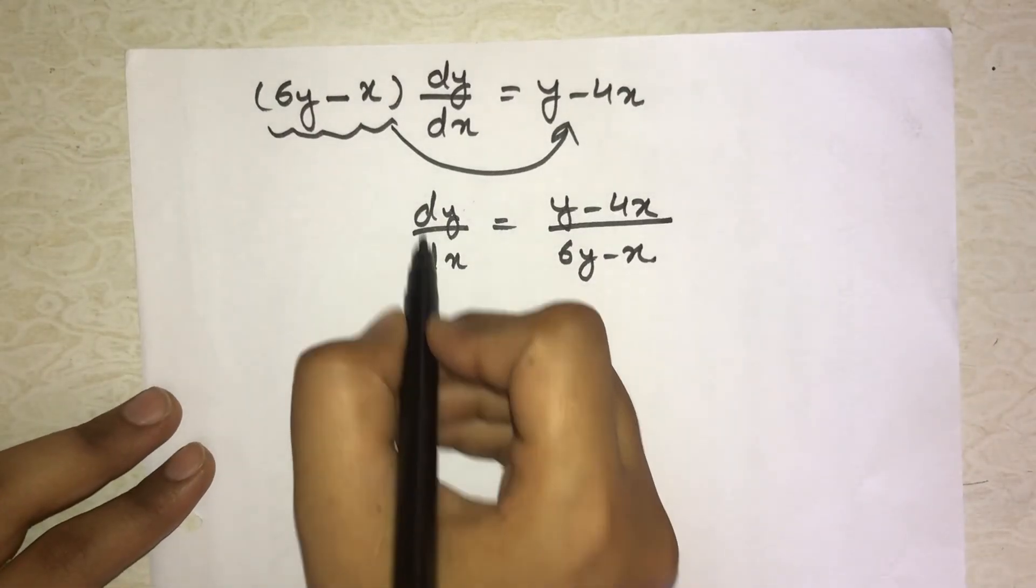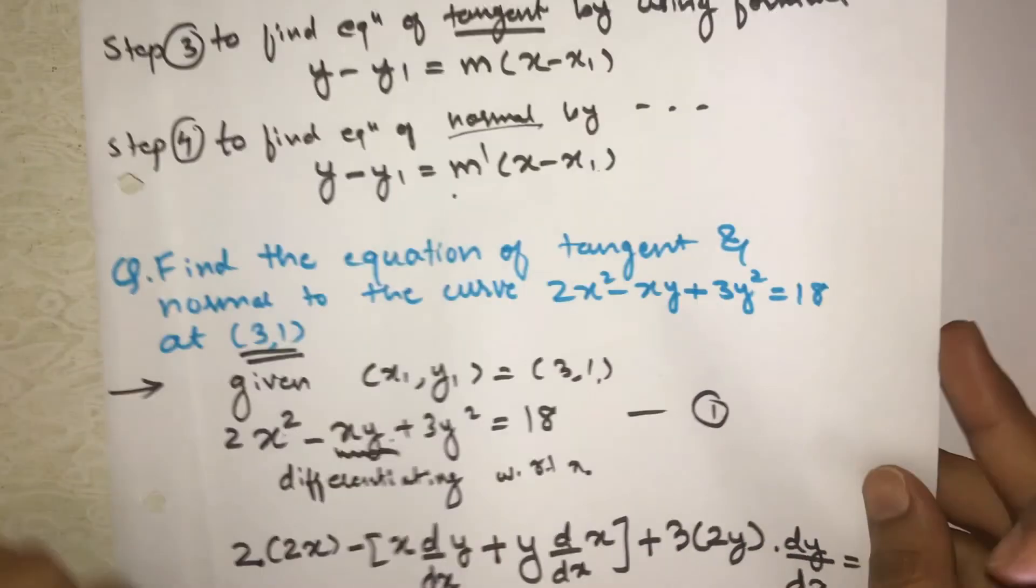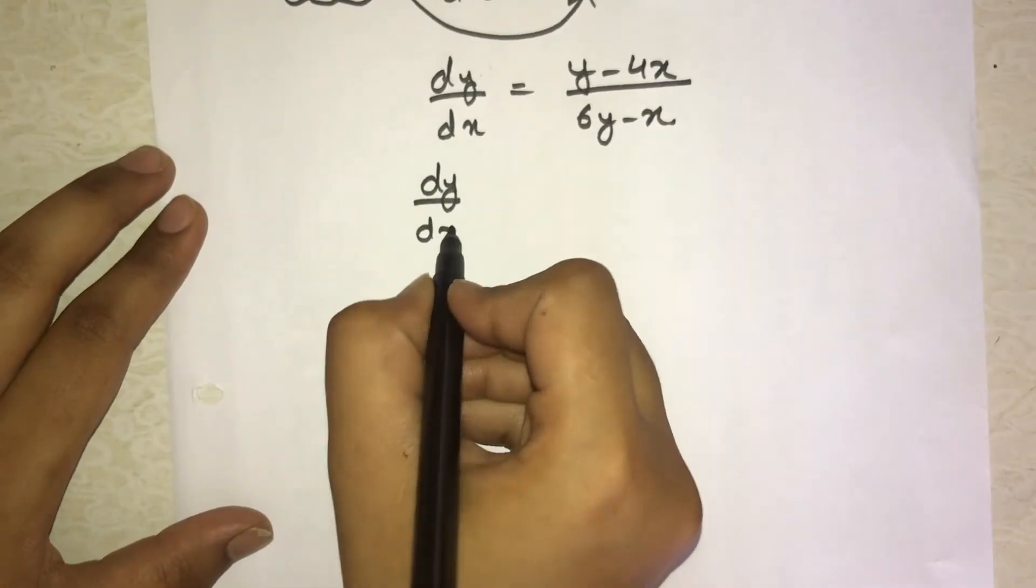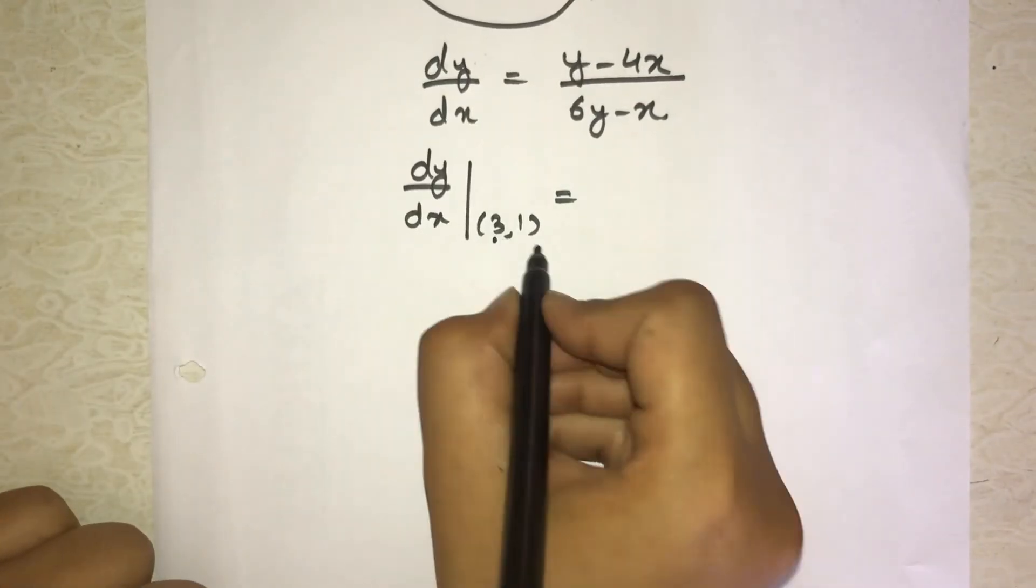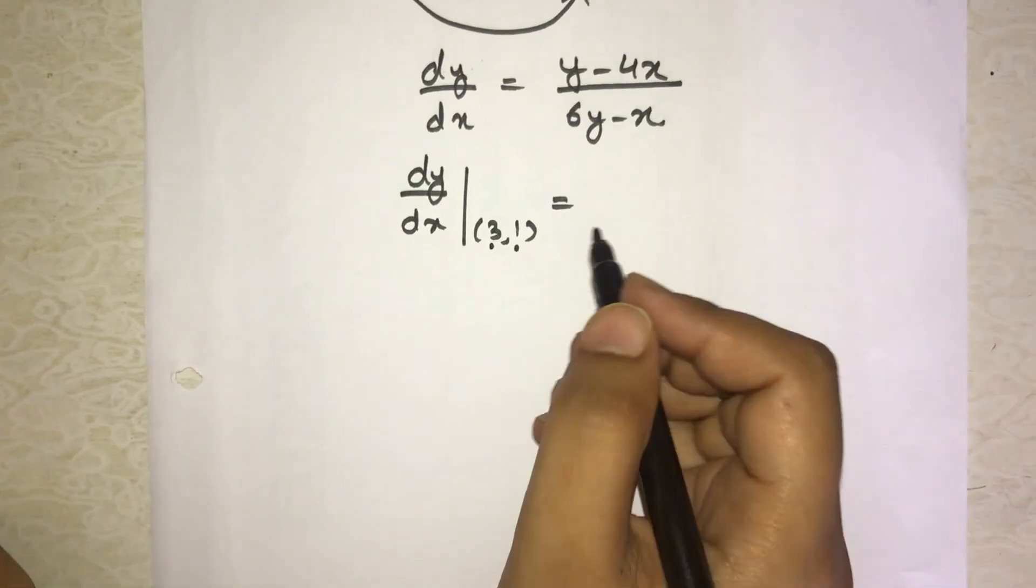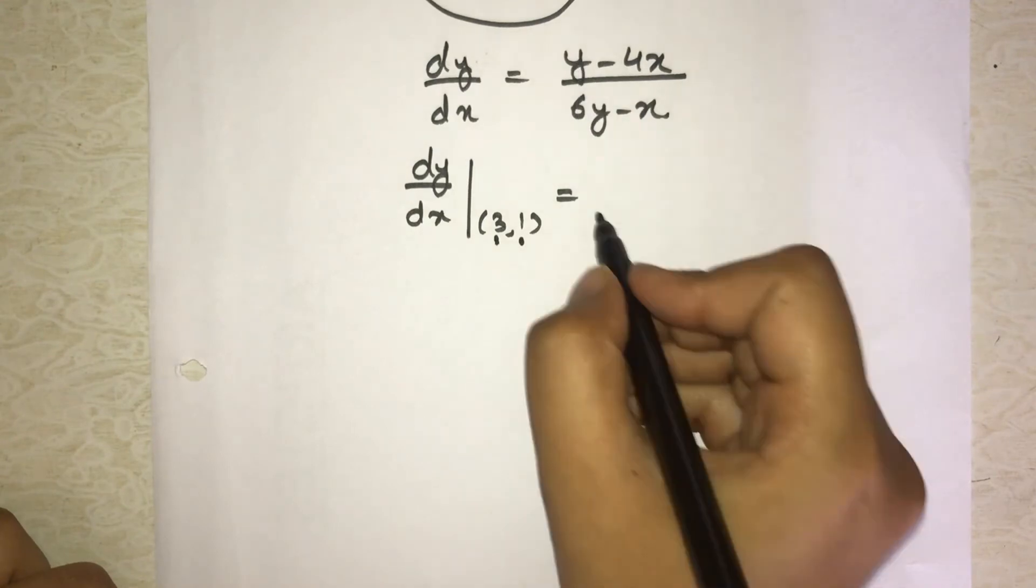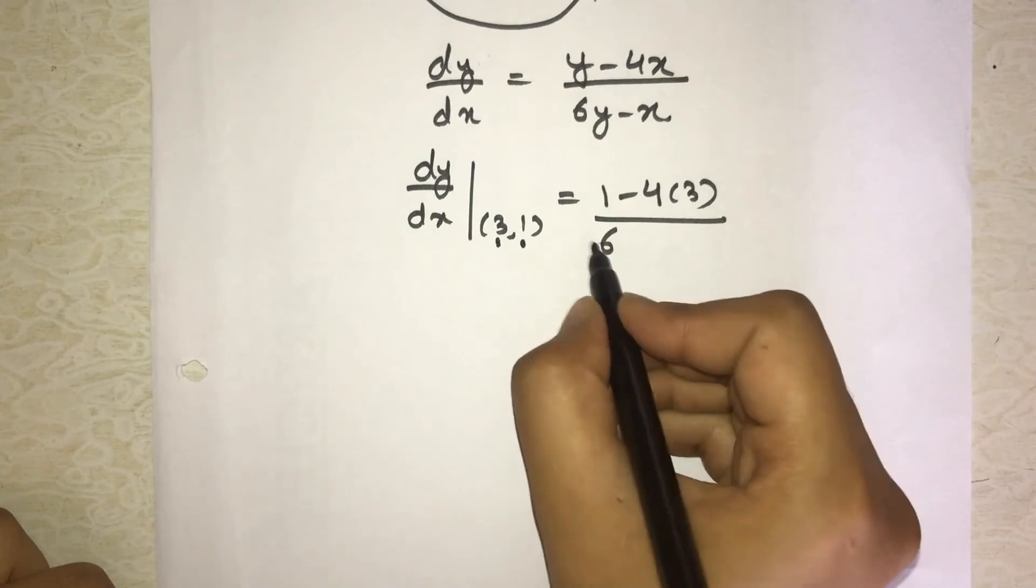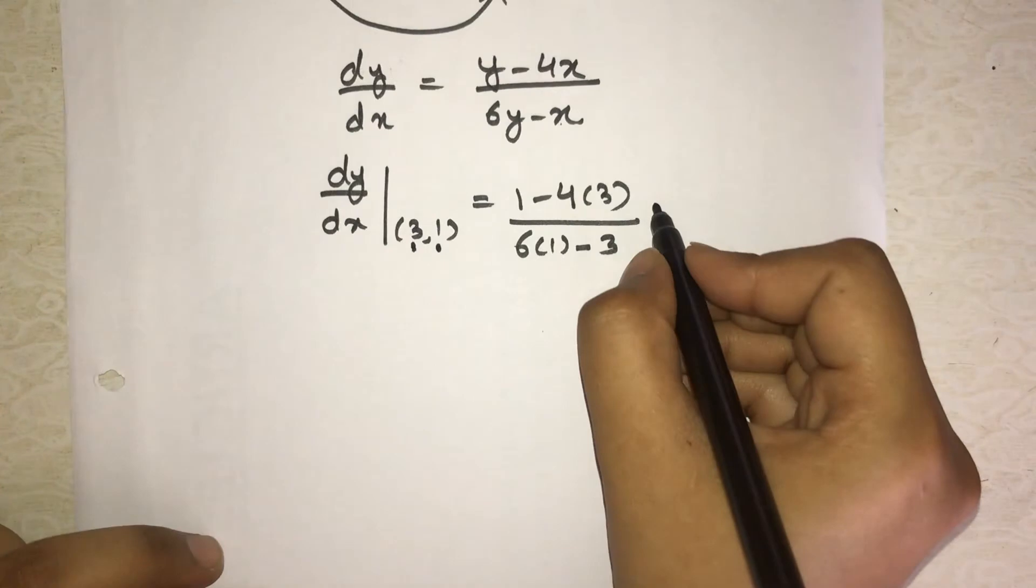Then what do we do? Here we take dy/dx common. So dy/dx taken common, what remains inside? Here 6y, then minus x, equals to these terms y minus 4x as it is. Then what do we do? This bracket we take to the other side, so it will divide. So dy/dx will be (y - 4x) upon (6y - x).